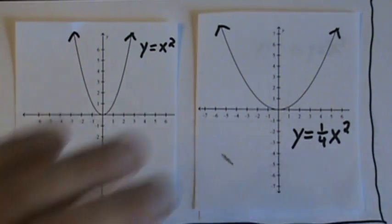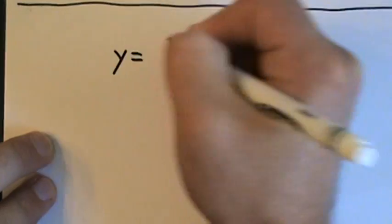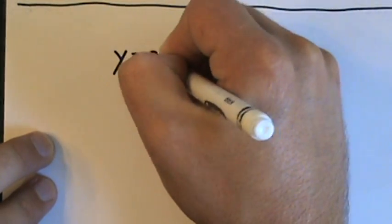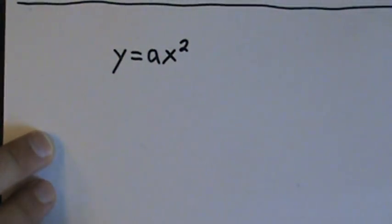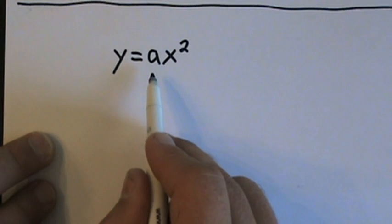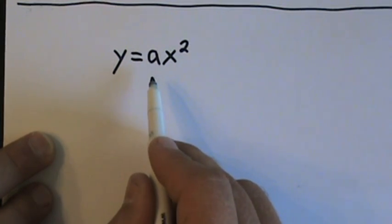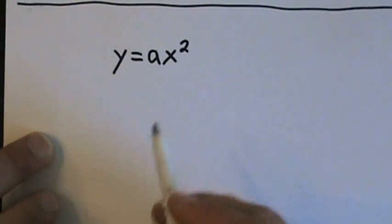Let's draw some conclusions. When graphing functions in the form y equals a x squared, we can look at a. a tells us about the direction the graph is going to point, and also about how wide or narrow the graph is going to be.